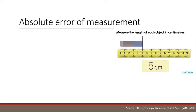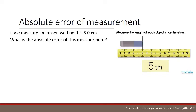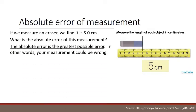To find the absolute error of measurement for this eraser, we know that it's five centimeters, and it's right on the line, so we can say it's 5.0 centimeters. But what is the absolute error of this measurement? Well, the absolute error is the greatest possible error.